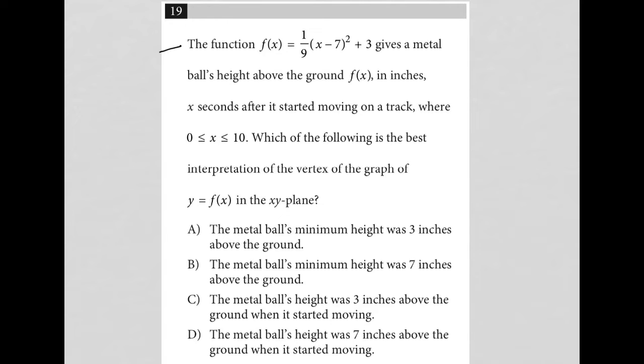This question says the function f(x) equals one ninth (x minus seven) squared plus three gives a metal ball's height above the ground f(x) in inches, x seconds after it started moving on a track, where x is between zero and ten. So x is seconds, we're between zero and ten seconds.